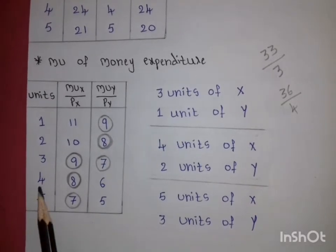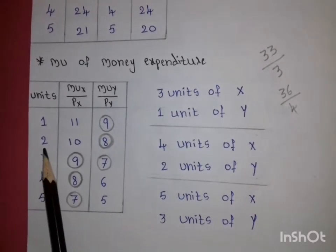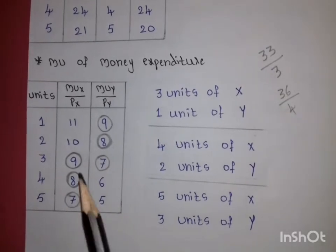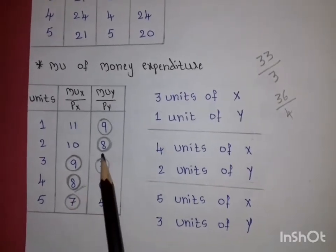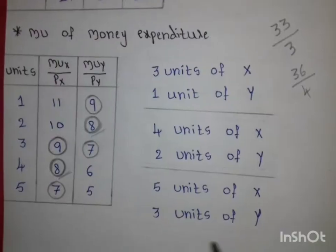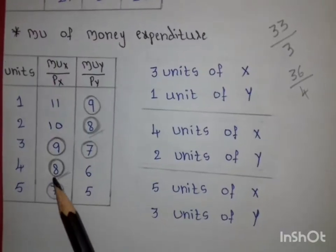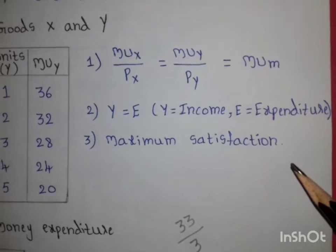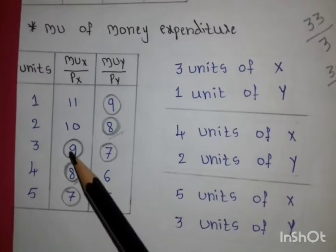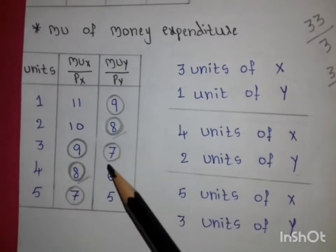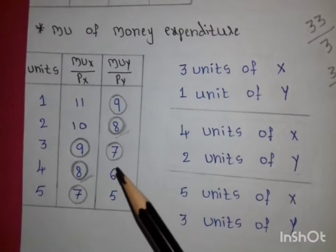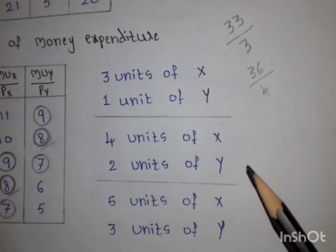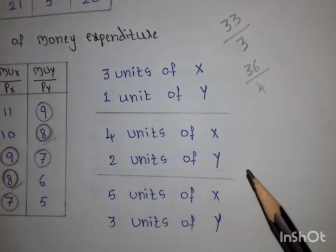However, the consumer purchasing 4 units of X and 2 units of Y achieves maximum satisfaction because only this combination satisfies all three conditions, while the other two combinations do not satisfy all three conditions.